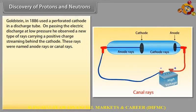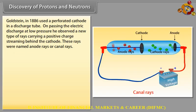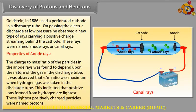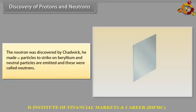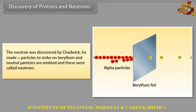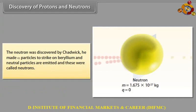Discovery of protons and neutrons: Goldstein in 1886 used a perforated cathode in a discharge tube. On passing electric discharge at low pressure, he observed a new type of rays carrying positive charge streaming behind the cathode, named anode rays or canal rays. The charge-to-mass ratio was maximum when hydrogen gas was used, indicating the lightest positive ions — named protons. Neutrons were discovered by Chadwick, who made alpha particles strike beryllium, emitting neutral particles called neutrons.